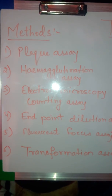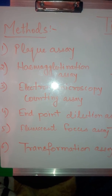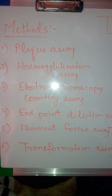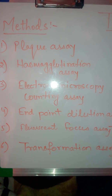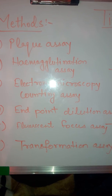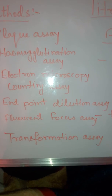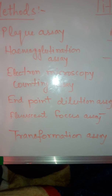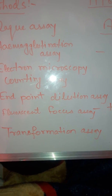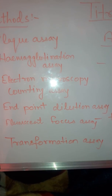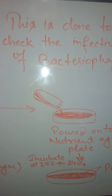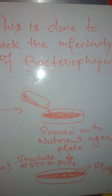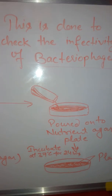There are various methods by which we can do the assay of viruses. First is the plaque assay, then hemagglutination assay, electron microscopy counting assay, endpoint dilution assay, fluorescent focus assay, and transformation assay. We will discuss these one by one. First is the plaque assay, which is done to check the infectivity.